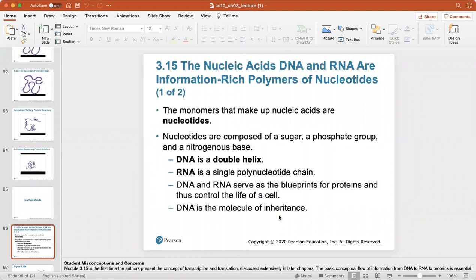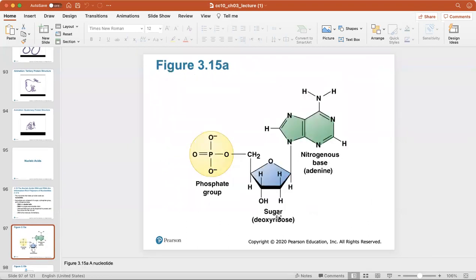We're going to end this chapter talking a little bit about nucleic acids, which are information rich polymers. The monomers that make up nucleic acids are nucleotides, composed of a sugar, a phosphate group, and a nitrogenous base. DNA is a double helix of all your genetic information. RNA is a single polynucleotide chain. DNA and RNA both serve as blueprints for proteins and control the life of the cell. DNA is the molecule of inheritance.